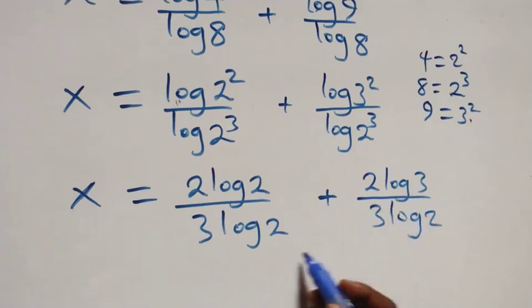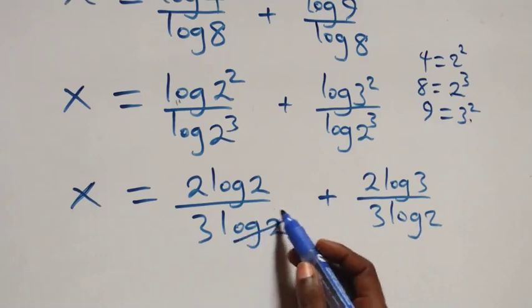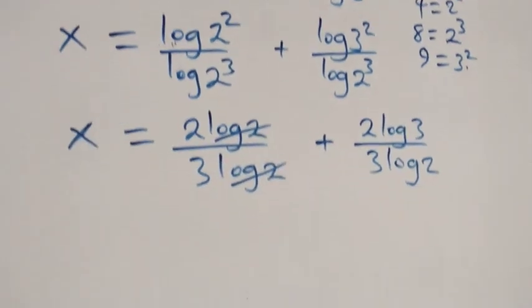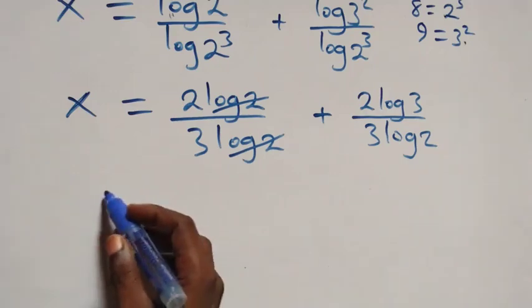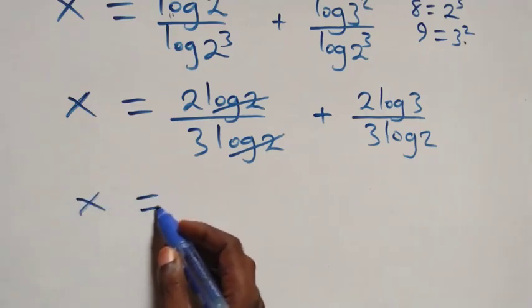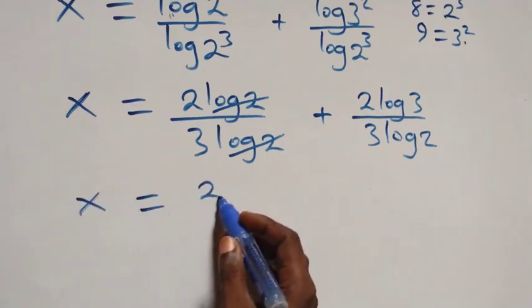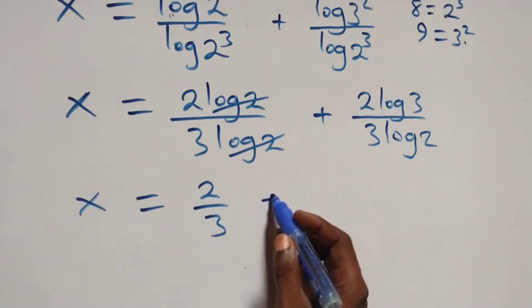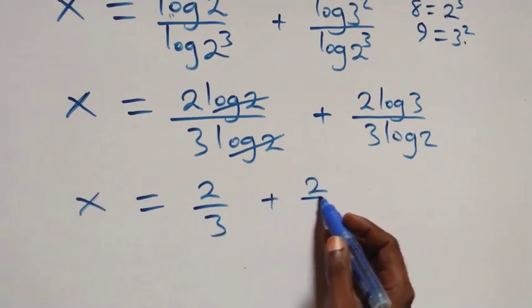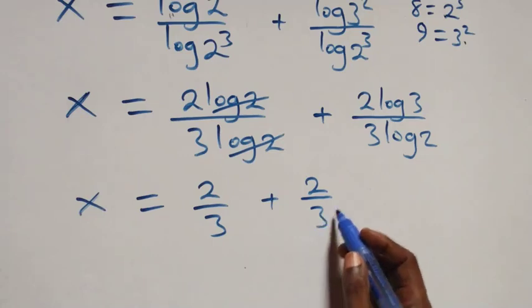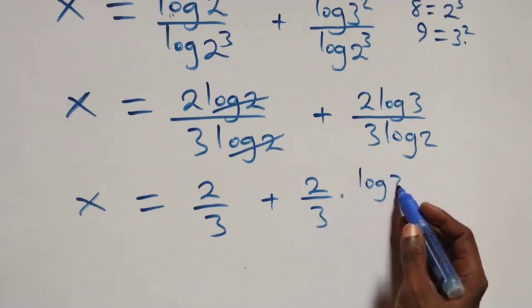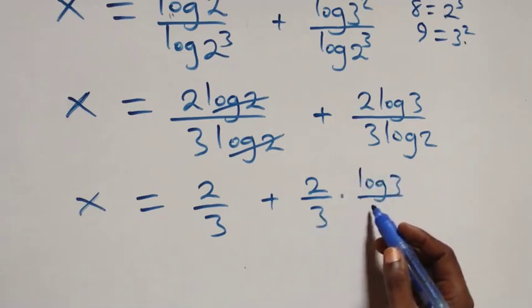Here log 2 cancels each other, and we are left with 2 over 3. This implies x equals to 2 over 3 plus 2 over 3 times log 3 over log 2.